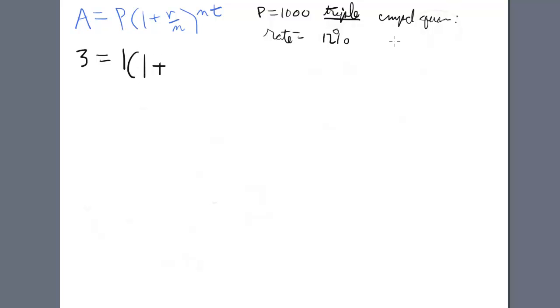1 plus compounded quarterly, what does that mean? Oh, the number of times it's compounded is 4 per year. Bam! So we get N equals 4. The rate is 12%. Decimal mode, that's 0.12. So we put R over N. That's going to be 0.12 over 4 to the Nt. That's going to be 4 times T. That's what we don't know.